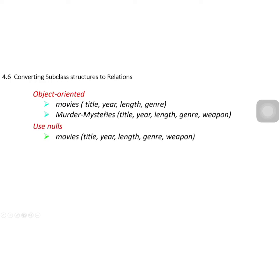If we use the null/use-null way, we convert the ER diagram into only one relation. This relation contains all attributes: title, year, length, genre, and weapon. If a movie is not a murder, the weapon component is null. If the movie is a murder, then we record the weapon value as the component.